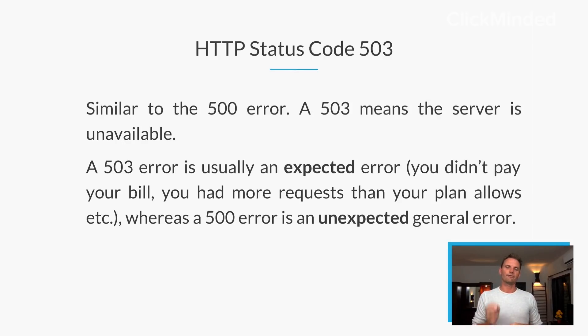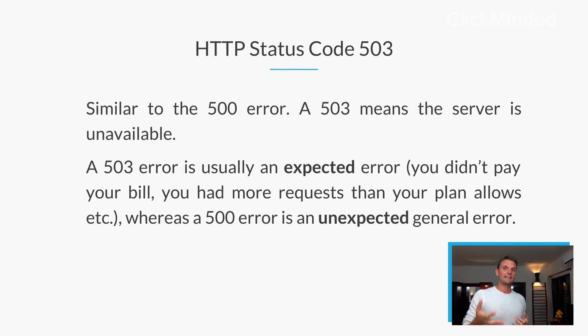The difference, however, is that a 503 error is usually an expected error. That means something like you didn't pay your bill, or maybe the plan you're on with your web host doesn't allow for that many requests. A 500 error is an unexpected general error — it usually means we don't know what happened, but something went bad with the server. A 503 error means something went bad with the server, but we know what happened. In every case, you still need to get in touch with your web host to figure it out. Usually the difference is a 503 error is an intentional server error, whereas a 500 error is a more general, unintentional error.